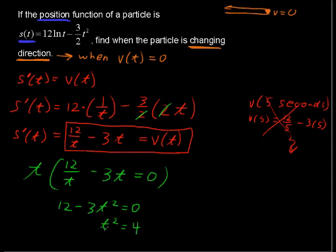I subtracted 12 and then divided by negative 3, so that's why I got t squared equals 4. Take the square root of each side. And I'm going to put it up here.